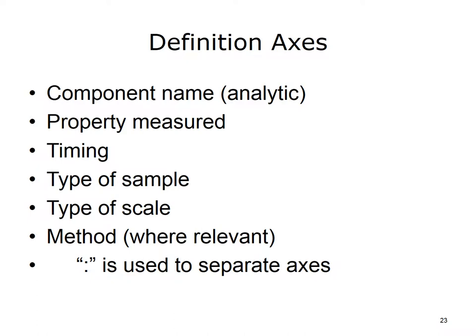4. Type of sample — Context or specimen type on which observation is made (e.g., urine, blood, serum); 5. Type of scale — Quantitative (true measurement), Ordinal (ranked set of options), Nominal (e.g., E. coli), Narrative (dictation from x-ray); 6. Method — Procedure used to make the measurement or observation (e.g., cuff method for blood pressure, and automated BP measurement).